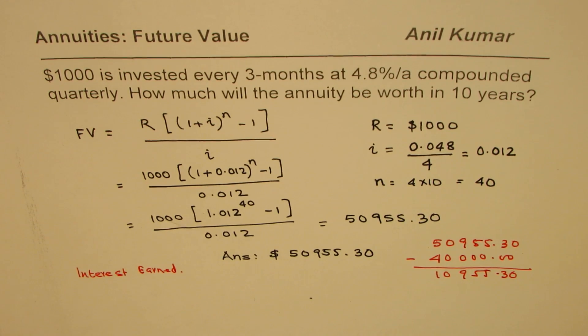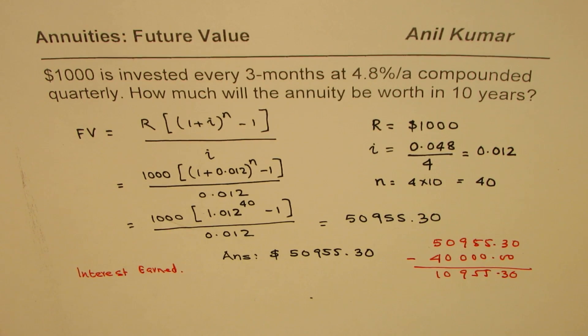Basically, you are depositing $40,000 over 10 years and after 10 years you earn an interest of close to $11,000. It is important to understand that in annuities you can actually earn a lot of interest. In this particular example, a deposit of $40,000 over a ten year period gives you an interest earning of around $11,000.